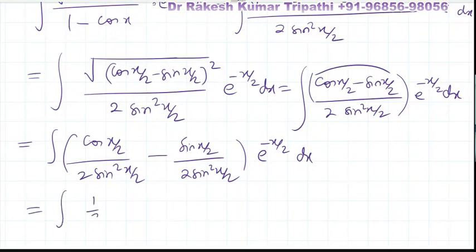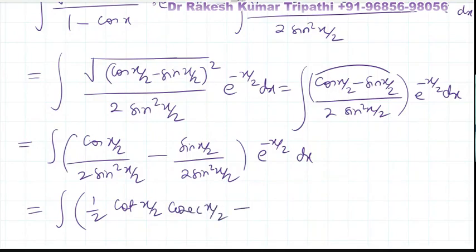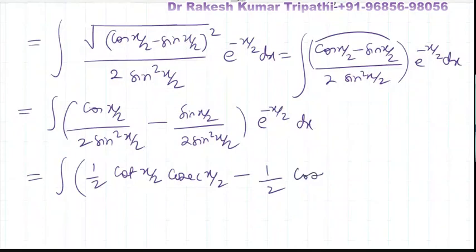On simplifying, we get (1/2)·cos(x/2)/sin²(x/2) - (1/2)·sin(x/2)/sin²(x/2), which simplifies to (1/2)·cot(x/2)·cosec(x/2) - (1/2)·cosec(x/2), all multiplied by e^(-x/2).